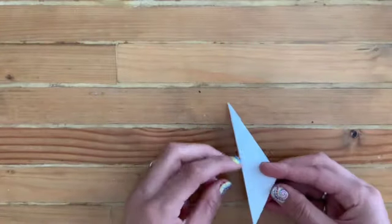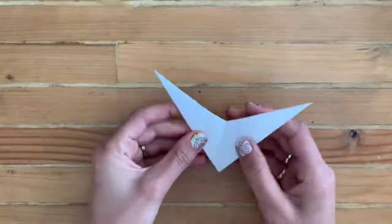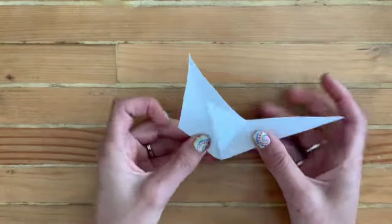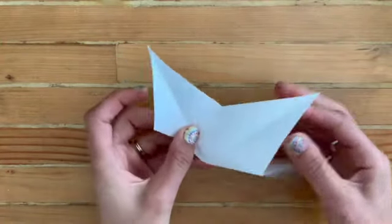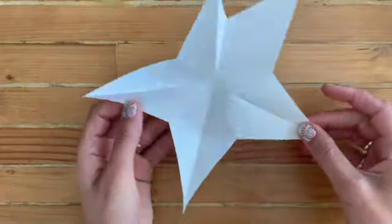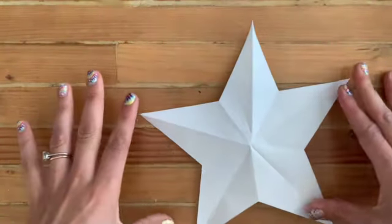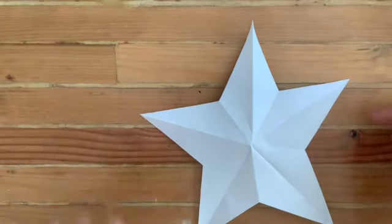This triangle is your star so you can unfold it and reveal your beautiful five-pointed star. There you go and you have nice creases on those sections.